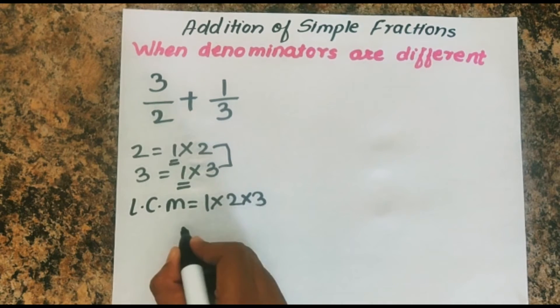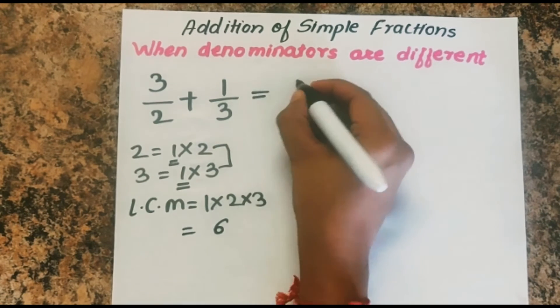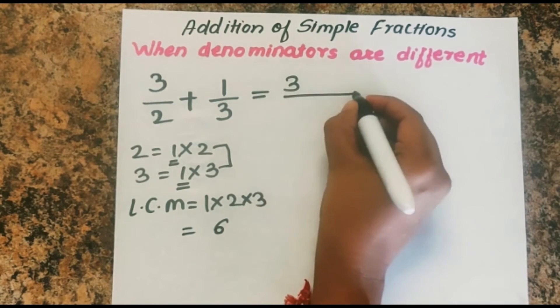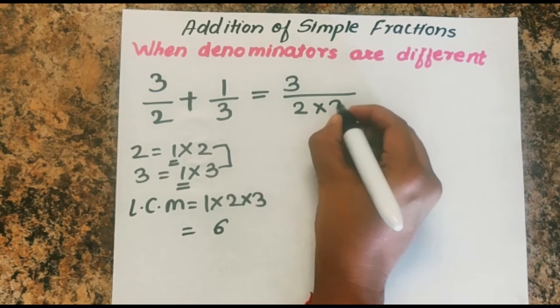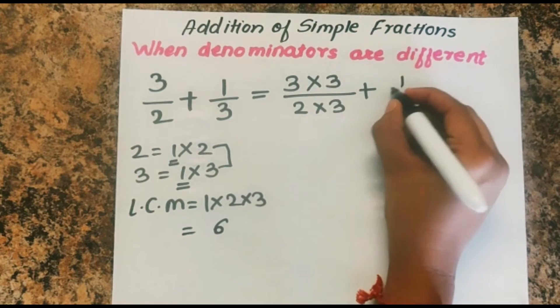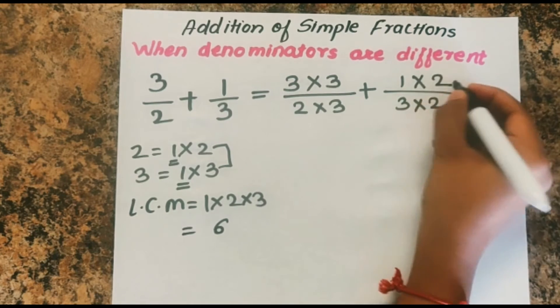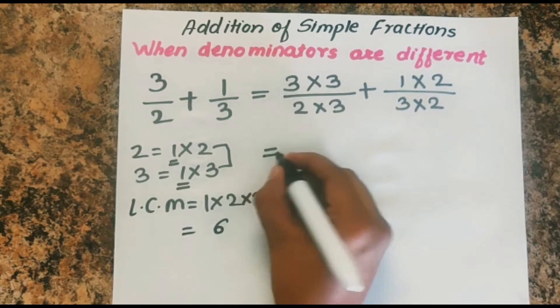Which is equal to 6. So let's make it as 6. 2 into 3 is 6. Whatever you do to the denominator, same has to be done with the numerator. Multiply by 2, so 3 into 2.